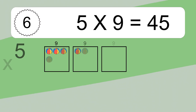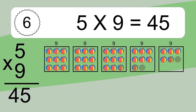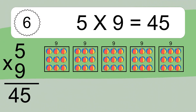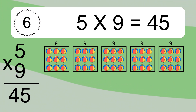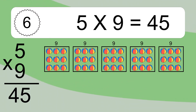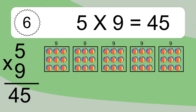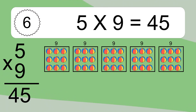5 times 9 equals what? 5 times 9 equals 45. We have 5 boxes and each box has 9 colorful balls inside. If you count all the balls in all the boxes together, you will have 5 times 9 balls. This equals 45 balls.